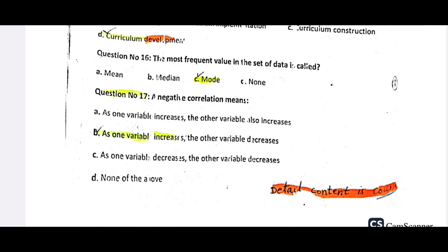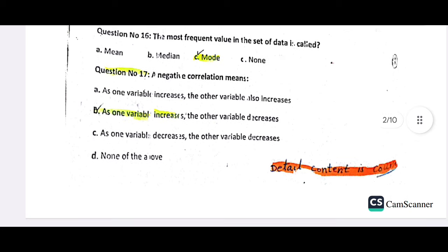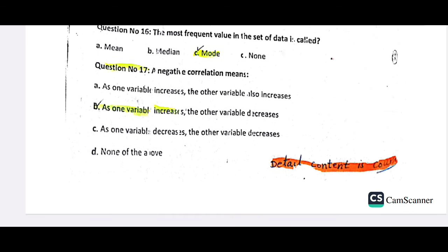In negative correlation, as one variable increases, the other variable decreases — not increases. So as one variable increases, the other variable decreases. Option number B is correct.